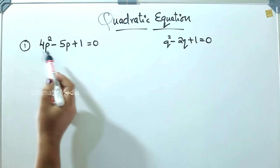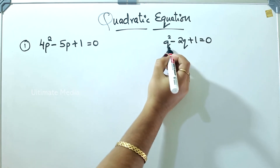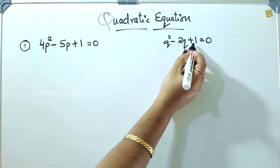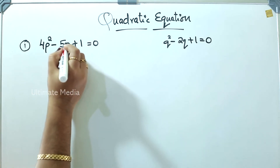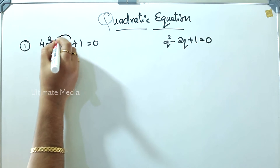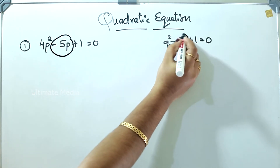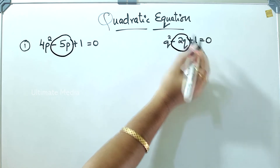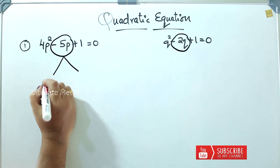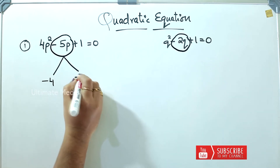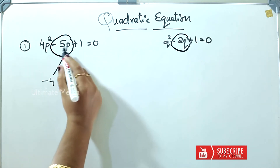The question is: 4p squared minus 5p plus 1 is equal to 0, and q squared minus 2q plus 1 is equal to 0. In this method, I will tell you. This is the middle term — it is minus 5p and minus 2q. Let's write this. It is minus 4 minus 1. Minus 4 minus 1 is minus 5.